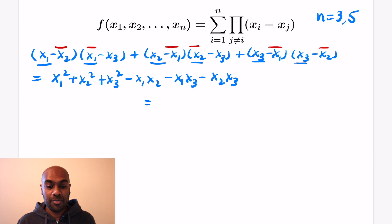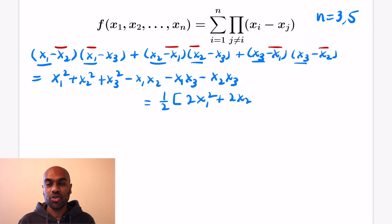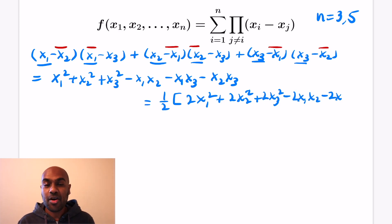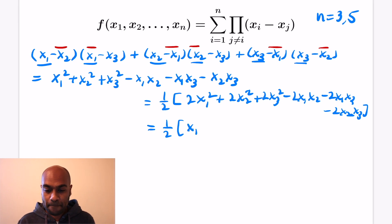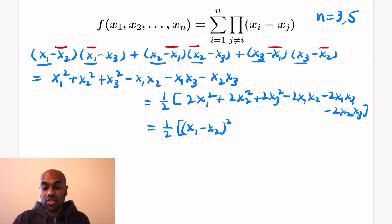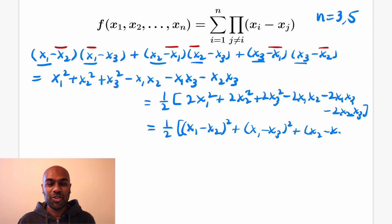We can actually find that this is a sum of squares in a different way. If you factor out a half, you can write this as 2x1 squared plus 2x2 squared plus 2x3 squared minus twice the cross terms. Now we can pair these in a nice way: take one of the x1 squareds, one of the x2 squareds, and pair it with the minus 2x1 x2 to get x1 minus x2, all squared. That leaves us with an x1 squared and an x2 squared left over, so we can use those with the x3 squared — two copies — to get an additional x1 minus x3 squared and an x2 minus x3 squared.